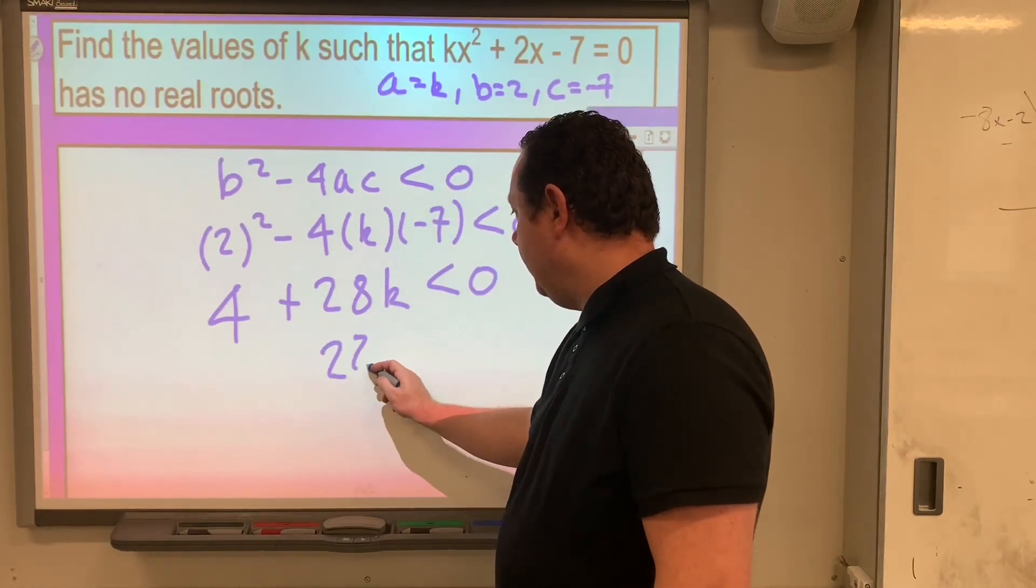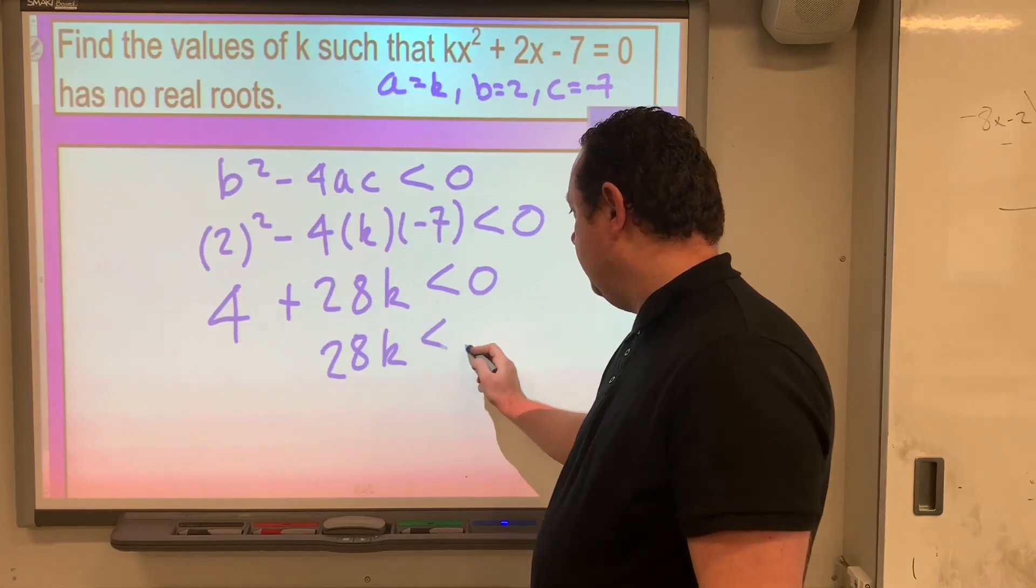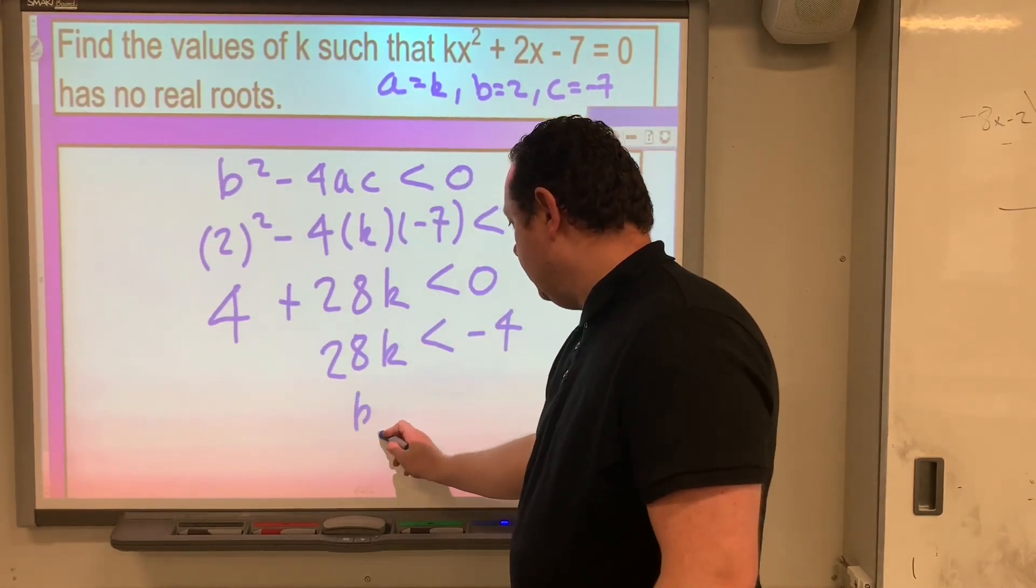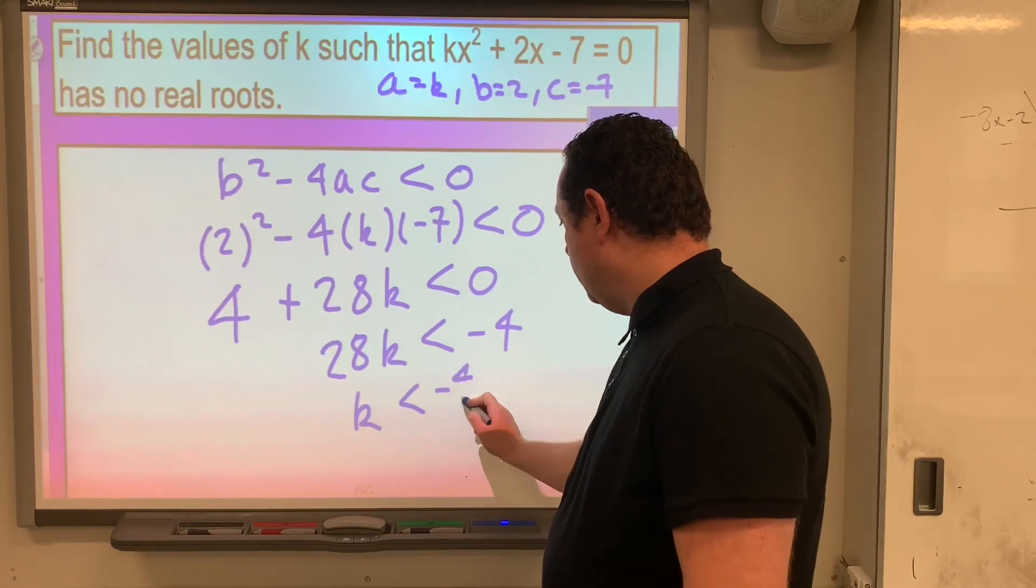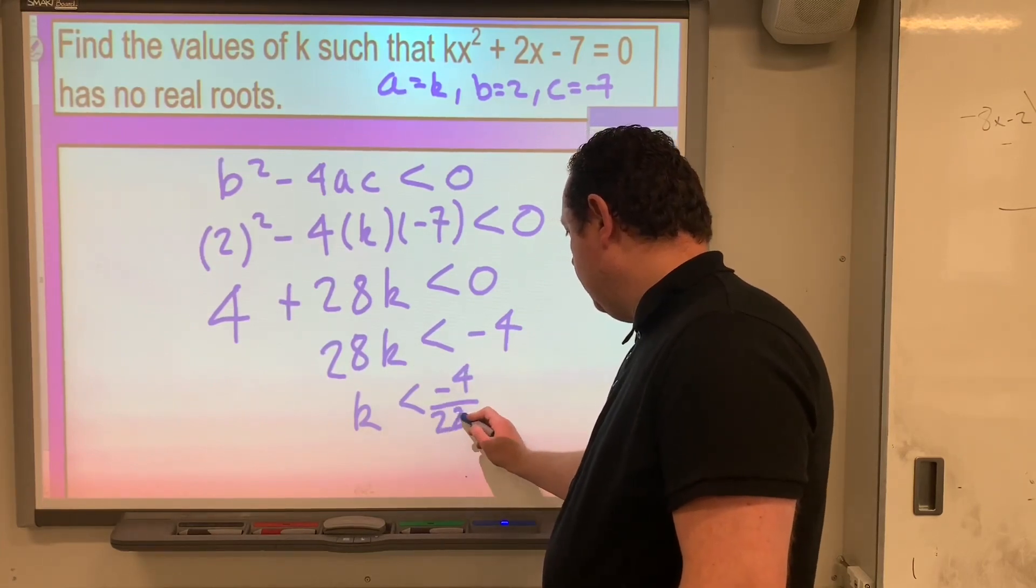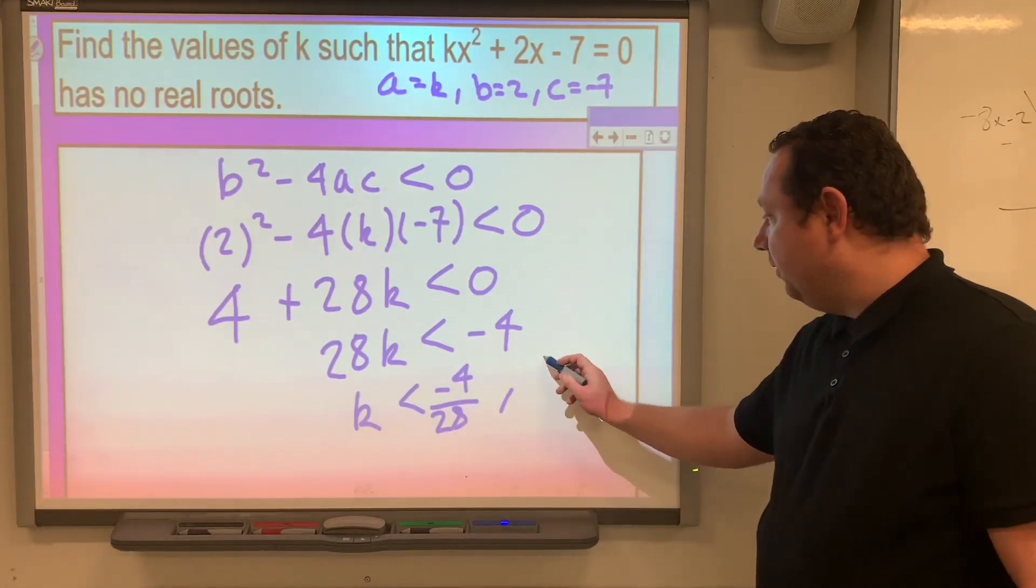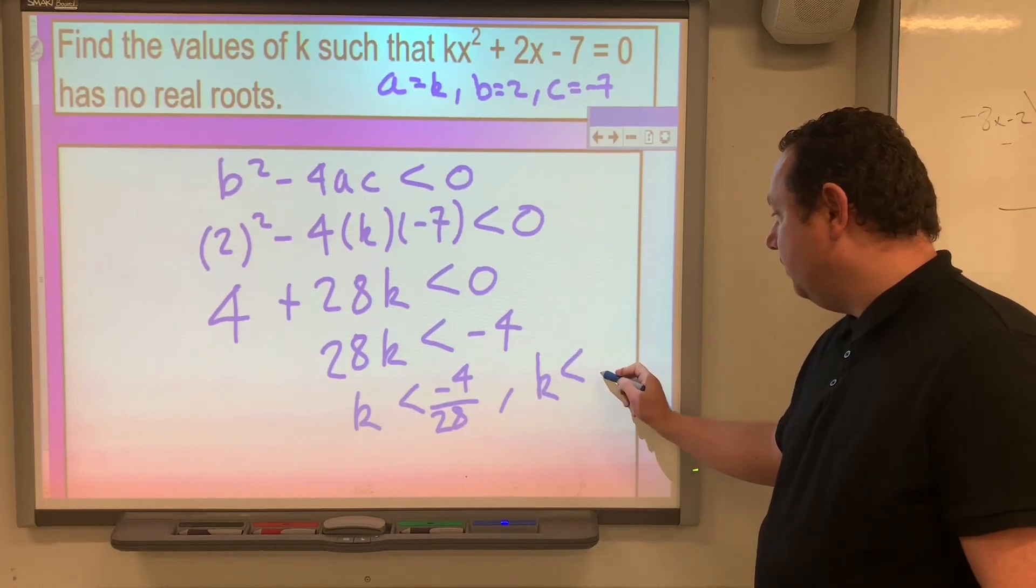So 28k must be less than negative 4. Or k is less than negative 4 over 28. Simplifying the fraction, k must be less than negative one-seventh.